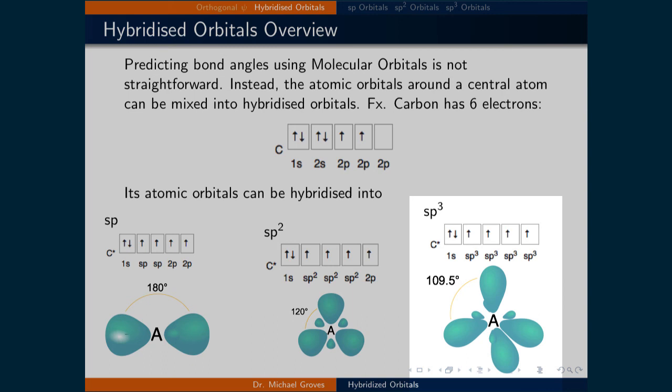Finally, if the 2s and all three of the 2p orbitals are mixed, then we get four sp3 orbitals. In this case, the name implies that there are three times as many p orbitals as s orbitals involved. The predicted geometry for these four orbitals is tetrahedral.